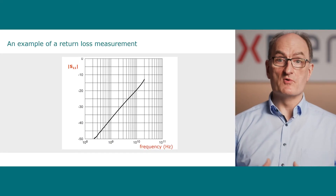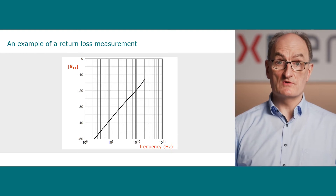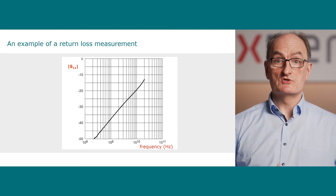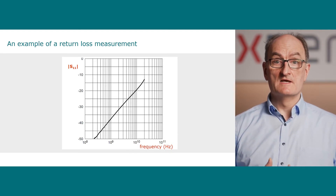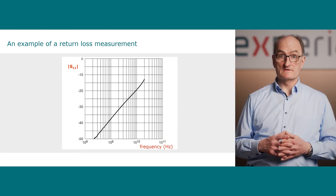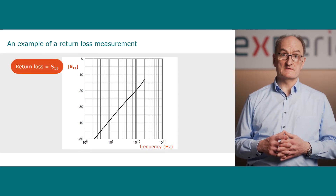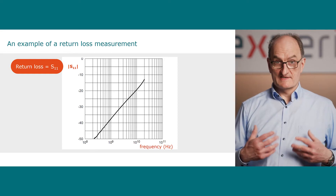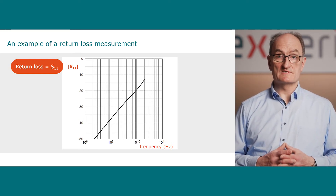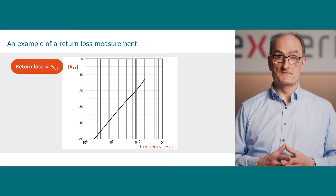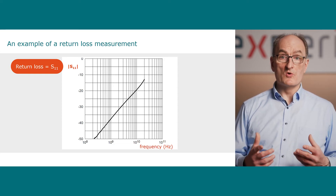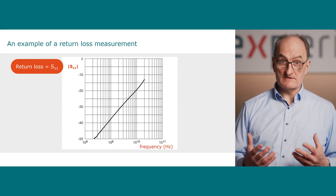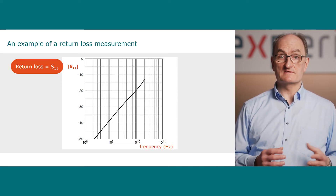Another important scattering parameter is return loss, which shows the amount of reflection by a device or a system. Return loss is described by the scattering parameter S11. Scattering parameters can be used to simulate the signal integrity of a given device or system, taking all device parasitics like capacitance or inductance into account.